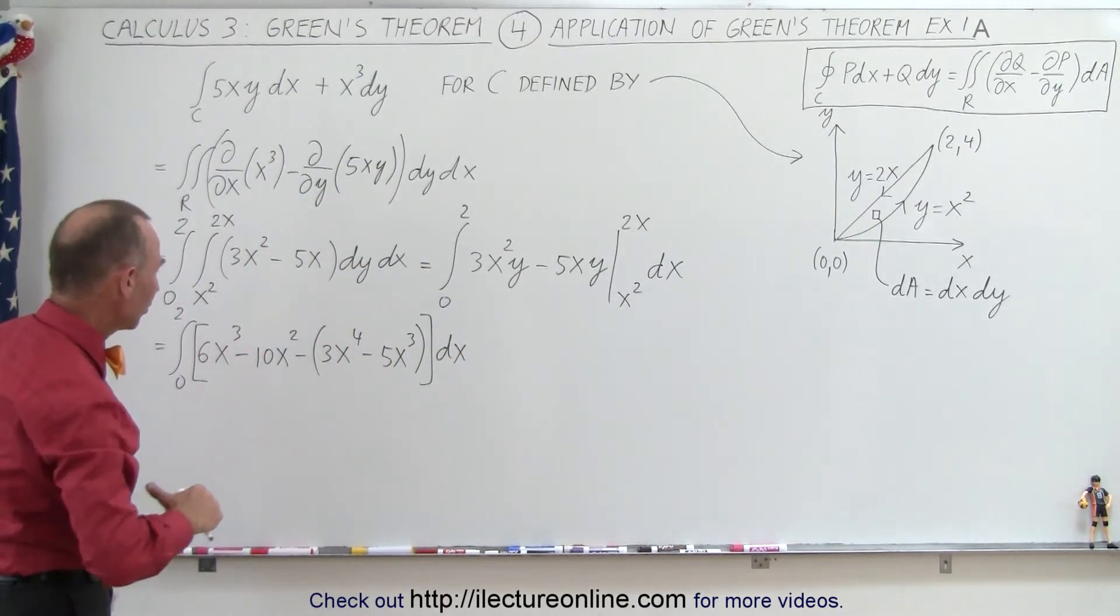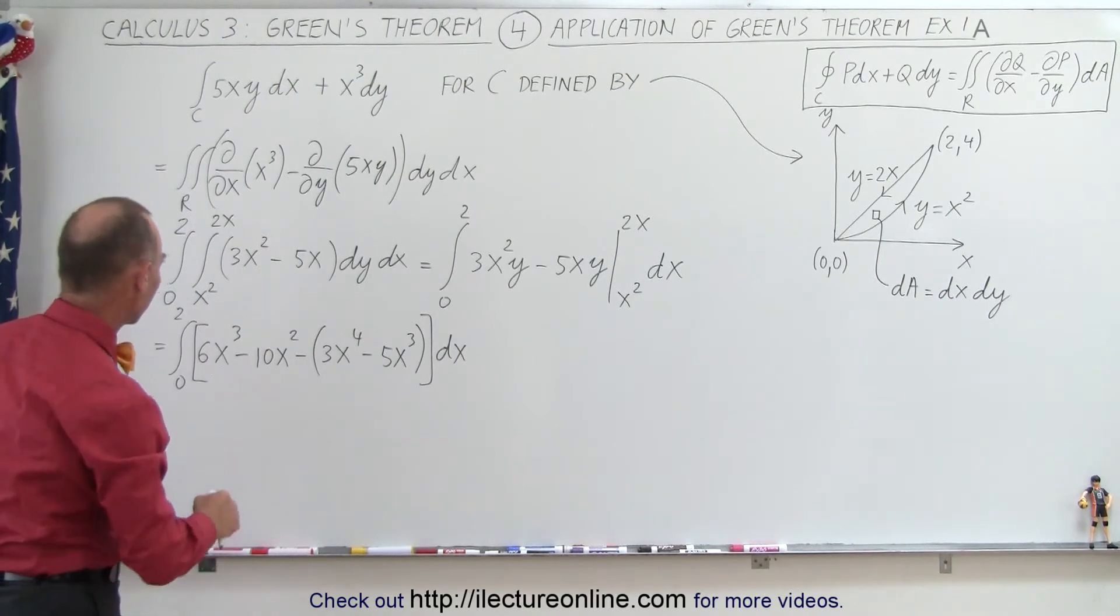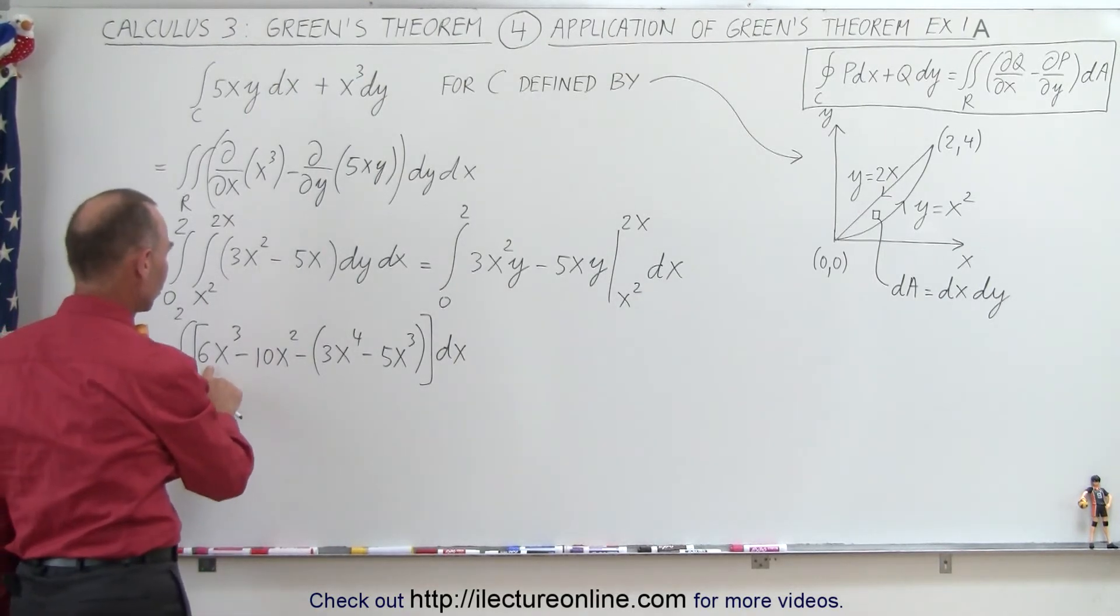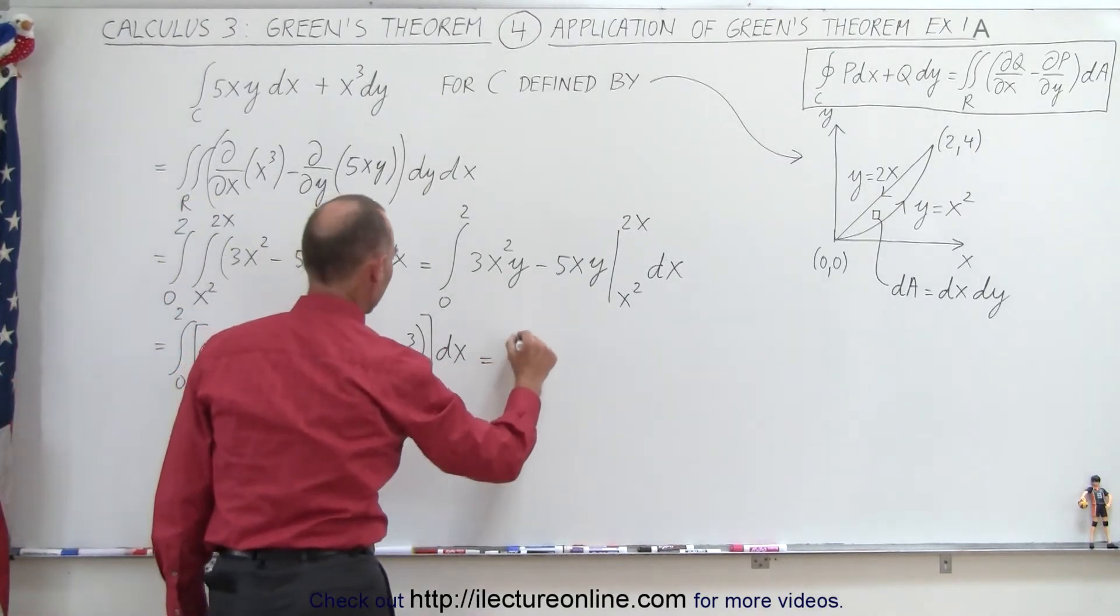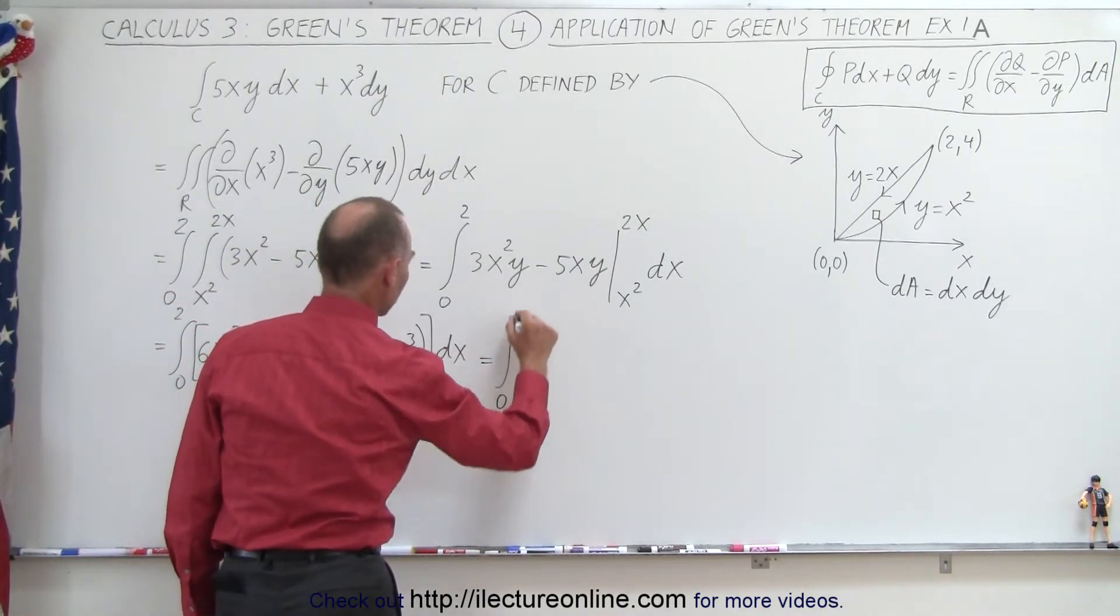And let's see, we could potentially combine some like terms here. We have a 6x³ minus a -5x³. So this is equal to the integral from 0 to 2.